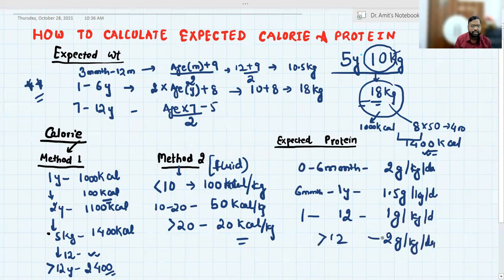So the child is 5 years. For 5 years, the requirement is 1 gram per kg per day you have to give, and this weight, no 10.